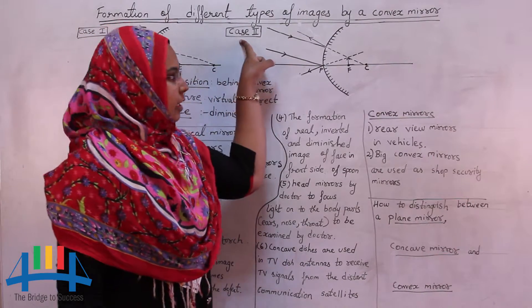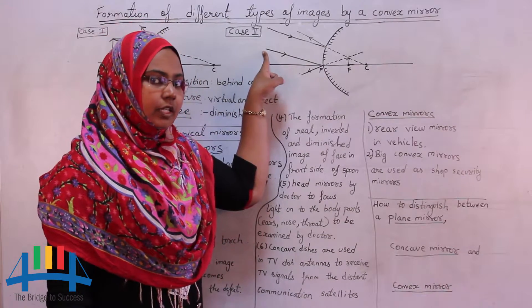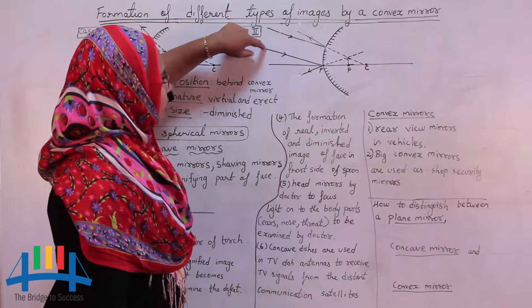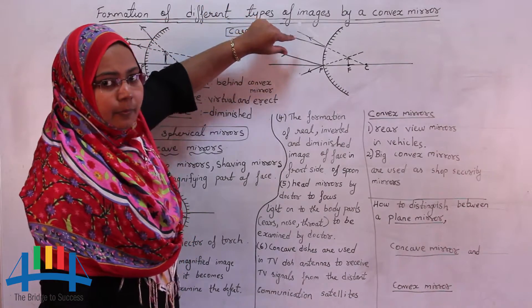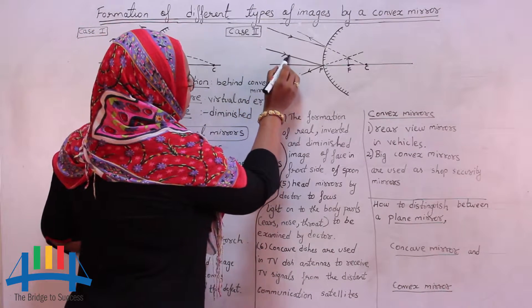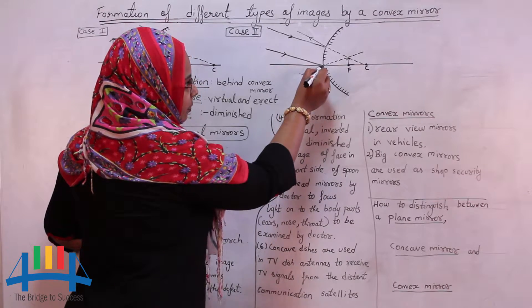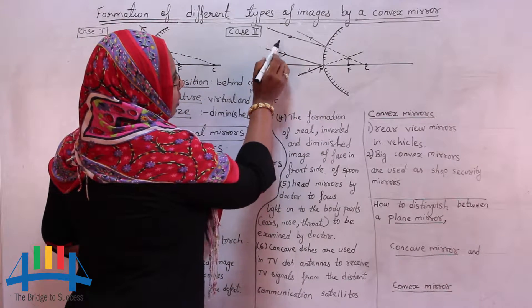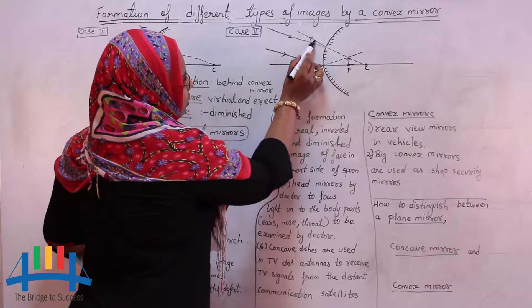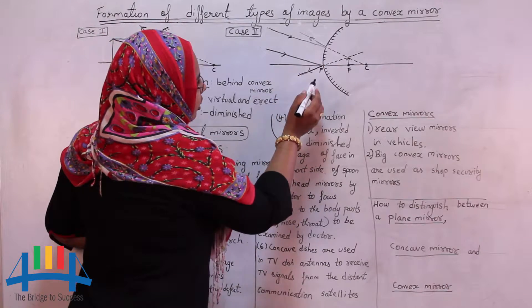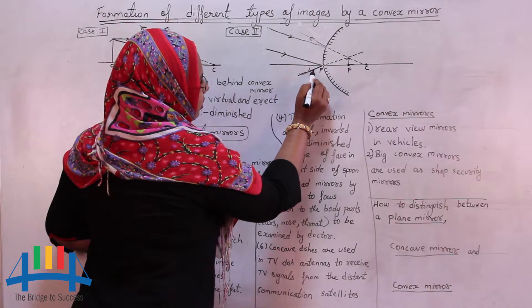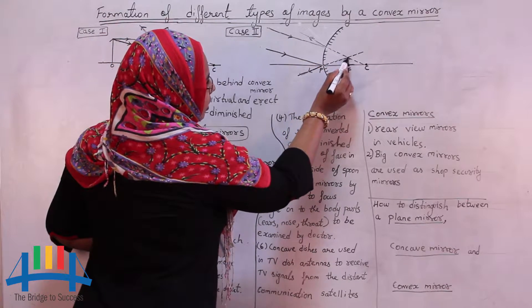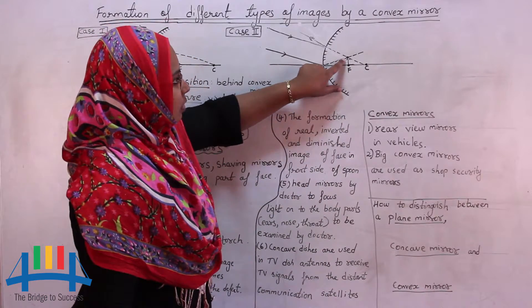In the second case, the object is placed at infinity — a very far-off distance that cannot be shown in the diagram. The two incident rays coming from the top of the object are parallel to one another. The first incident ray comes from the top of the object, is incident at the pole, and makes an angle with the principal axis. The second ray, parallel to the first, falls on the convex mirror and gets reflected. When you extend these reflected rays backwards, they meet at the focus.